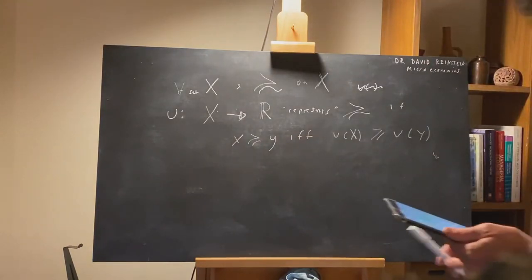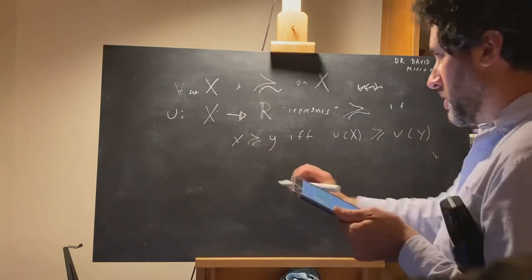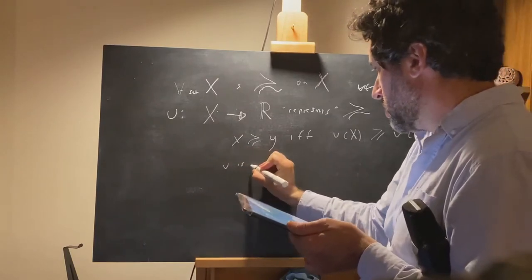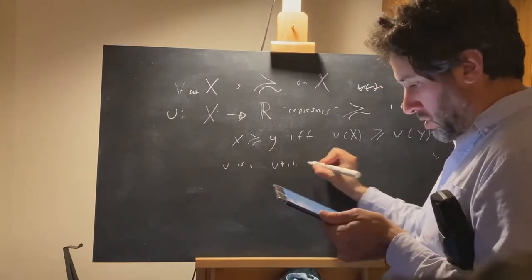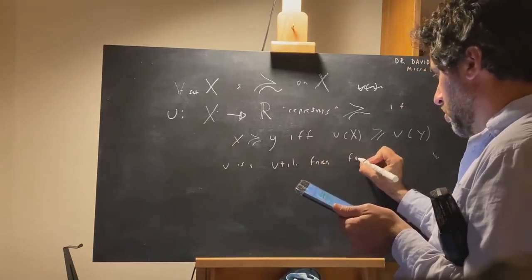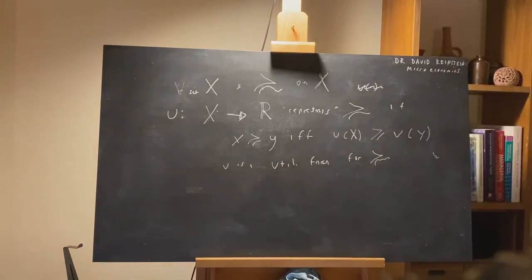This function represents preferences. If it represents preferences, we say u is a utility function for these preferences. In other words, we can...